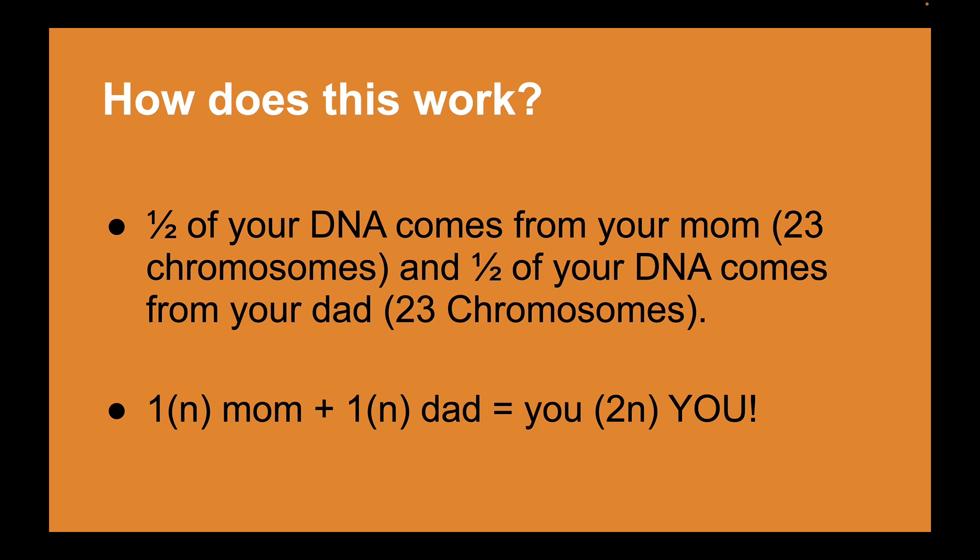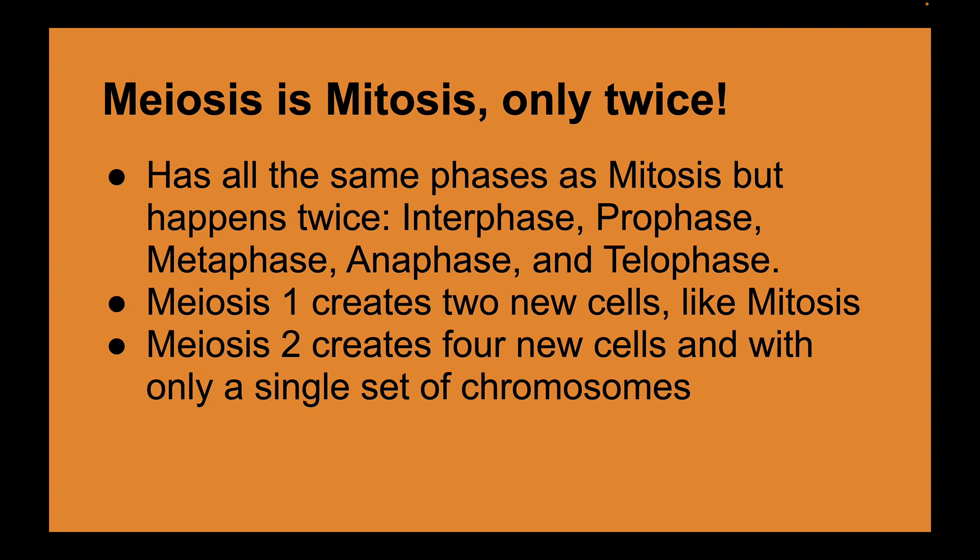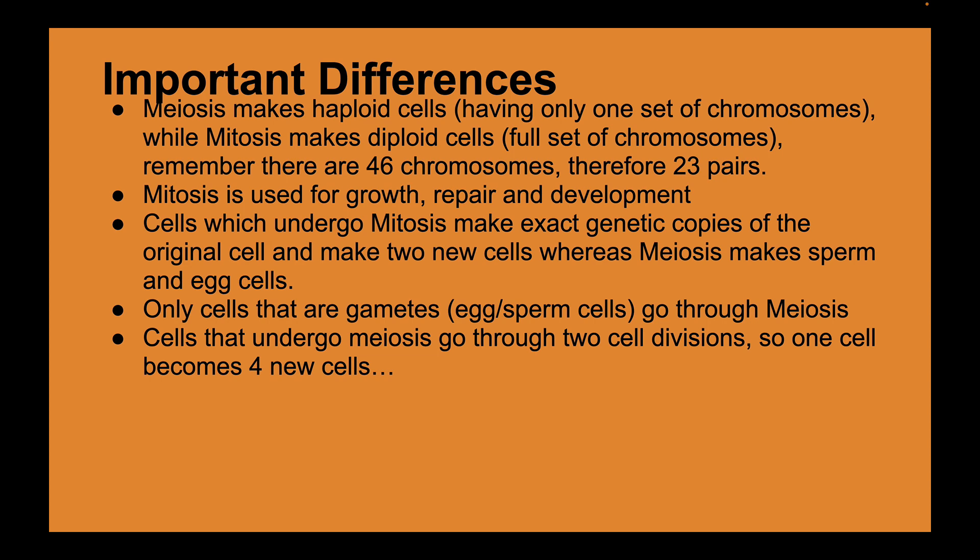Meiosis is like mitosis but done twice — there are two divisions. You'll have prophase, metaphase, anaphase, and telophase happening twice, but there is only one interphase at the beginning. Meiosis I creates two cells like mitosis does, but then a second division — meiosis II — creates four new cells, each with only a single set of chromosomes. Importantly, meiosis makes haploid cells with one set of chromosomes, while mitosis makes diploid cells. Human beings have 46 chromosomes, meaning 23 pairs.